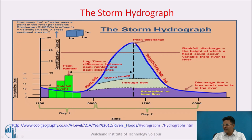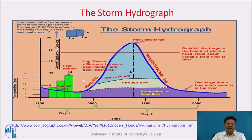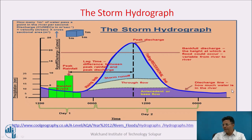Peak discharge is reached at a particular time, after which water starts receding in the river channel — this falling portion is called the recession limb. During the flood event, percolation to groundwater increases the base flow. When surface water stops contributing, the flow in the channel returns to groundwater flow or base flow. This is the typical storm hydrograph showing time versus discharge due to surface water as well as groundwater, with surface water divided into surface runoff and throughflow.